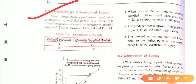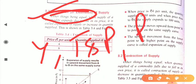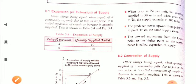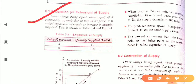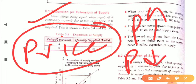Extension of supply means that when the price of a commodity increases, its quantity supplied increases and all other things remain constant. Those other things are the determinants of supply — like income, taste and preference of consumers, population, and future expectations. Always keep in mind that extension and contraction happen only because of price; there are no other reasons.